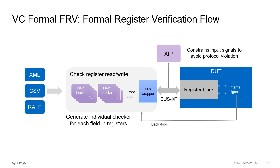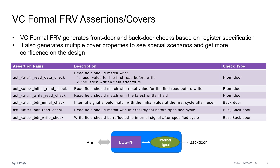Users can also enable backdoor checks by providing internal signals in the register spec. VC Formal FRV generates both front door as well as backdoor checks based on the register specifications. The read data check ensures that the read data matches with the reset value if no write has occurred before, or else equals the latest written value.